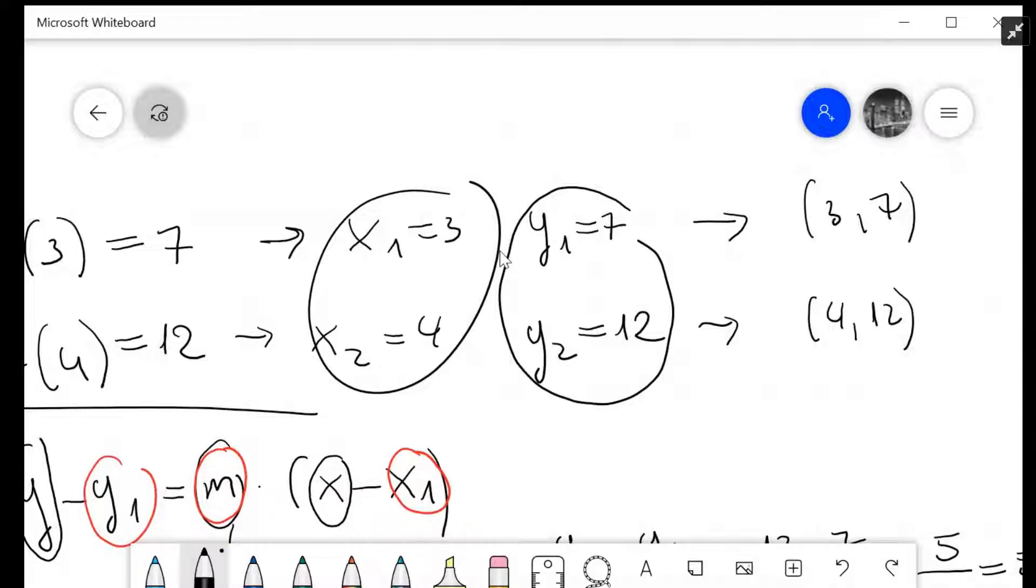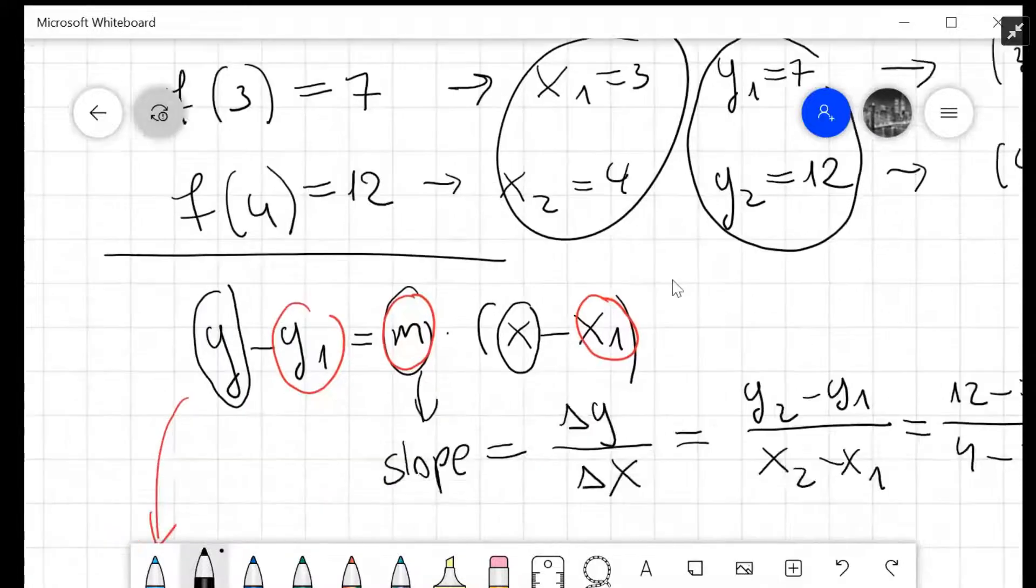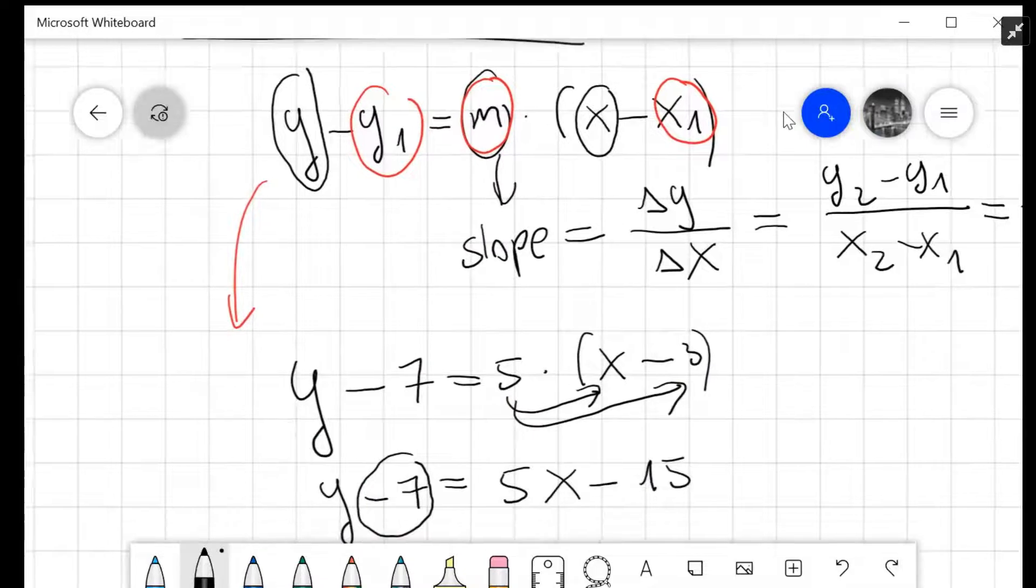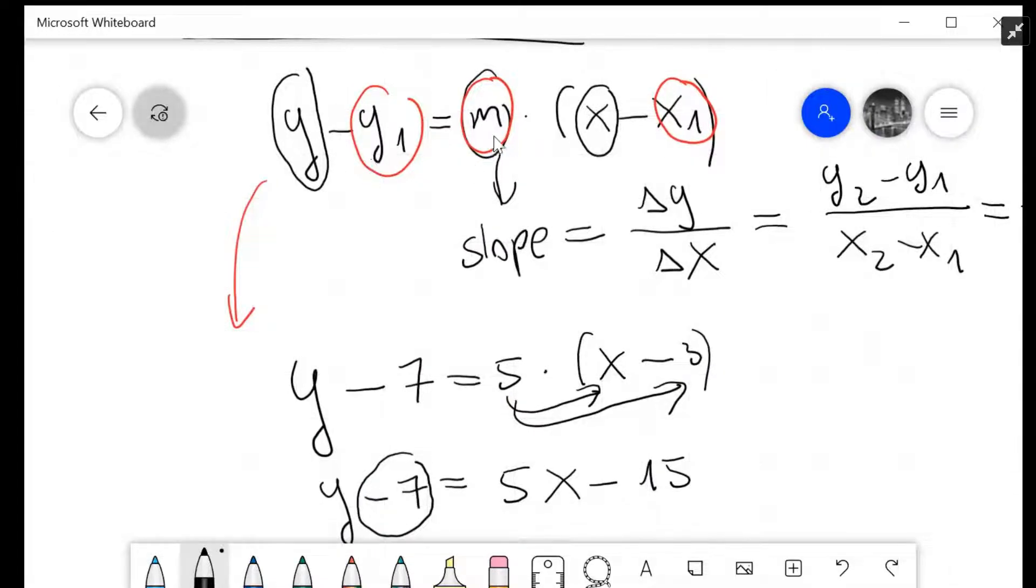From these, we form coordinate points. So x₁ and y₁ give us the point (3, 7), and x₂ and y₂ give us the point (4, 12). Now we have two points and need to create a function between them, for which we'll use the point-slope form: y - y₁ = m(x - x₁), where m is the slope.